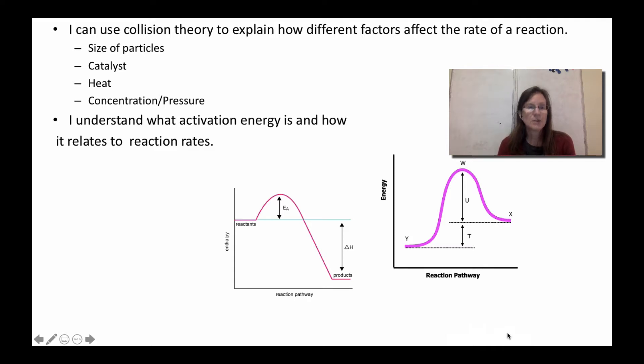Number two, I understand what activation energy is and how it relates to reaction rate. Both these graphs show you activation energy—that's that hump. Essentially, it's the energy from start to peak if you're going forward, or from start to peak if you're going in reverse. So it's the amount of energy necessary to make the reaction happen. It's essentially a barrier for all reactions because that energy is higher than the energy difference between reactant and product.